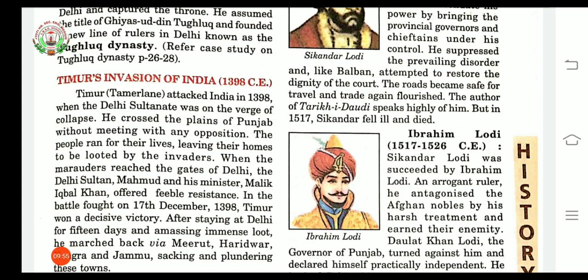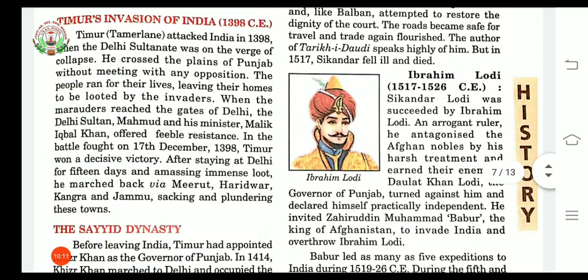In the battle fought on 17 December 1398, Timur won a decisive victory. Timur stayed at Delhi for 15 days and took a large quantity of loot. Then he returned via Meerut, Haridwar, Kangra, and Jammu, with sacking — meaning large-scale destruction of buildings and towns — and plundering, meaning stealing from people and places during war.